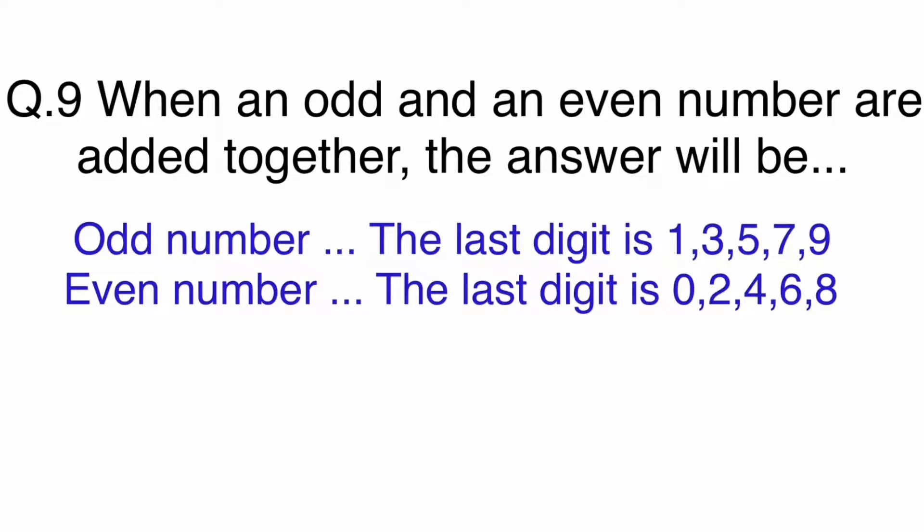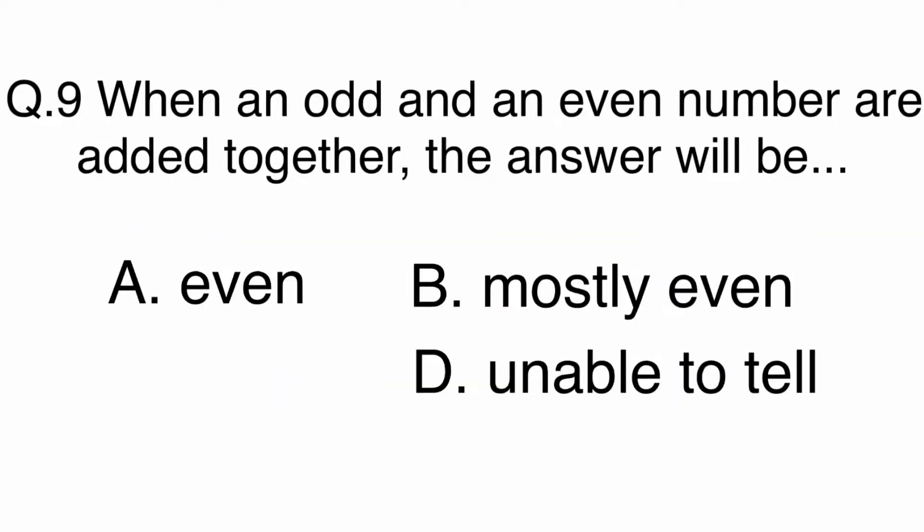If the last digit is 1, 3, 5, 7 or 9, it is an odd number. If the last digit is 0, 2, 4, 6 or 8, it is an even number. So if you add odd and even numbers, the answer will always be odd. The answer is C. Odd.